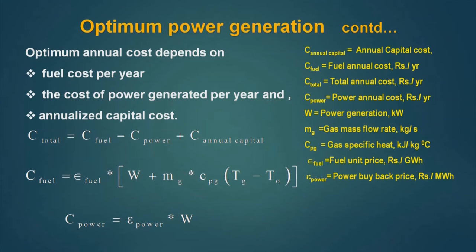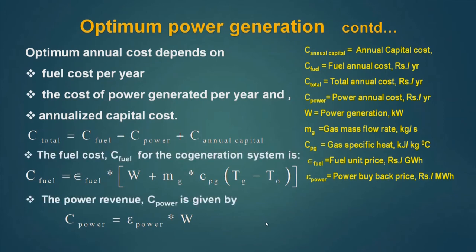C_fuel equals epsilon_fuel multiplied by (W plus M_g · C_pg · (T_g minus T_0)). Here T_g minus T_0 is the heat available with the gas referenced to temperature T_0, and W is what is being converted into work. For both work and heat we are spending fuel, so these are added up and multiplied with the fuel price to get the cost of the fuel. The cost of power will be the unit cost of power multiplied by W. By calculating these expressions we can find out the C_total, which is automatically the annualized cost or the TAC.